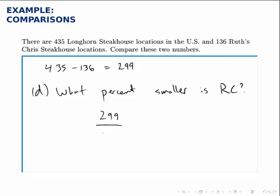So since I'm comparing this to Longhorn, I divide the 299 by 435. And I find that Ruth's Chris Steakhouse is 60.7% smaller than Longhorn.